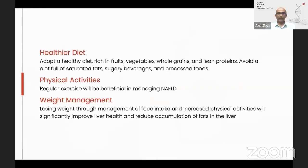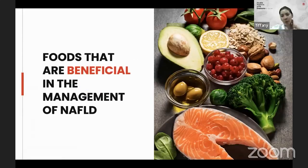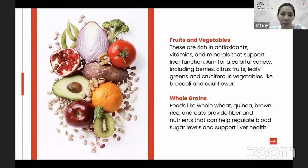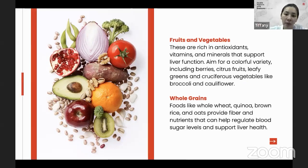Play real games — physical activities — that will help you to build muscle, lose fat, and lose weight. A healthier diet, especially cruciferous vegetables such as broccoli and Brussels sprouts, are very good to help the liver. Fruits and vegetables high in antioxidants, vitamins, and minerals — aim for a colorful variety. Whole grains like whole wheat, quinoa, brown rice, and oats can help regulate blood sugar levels and support liver health.